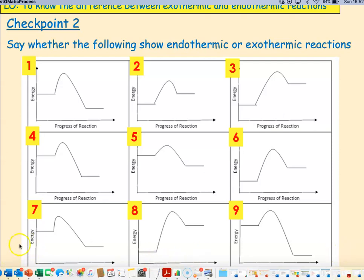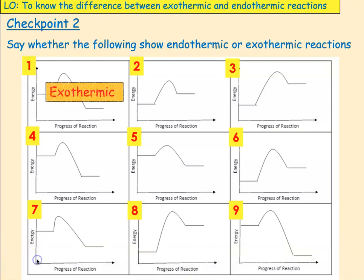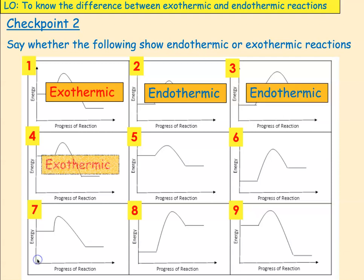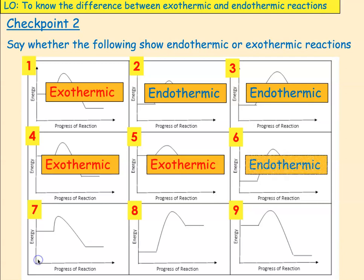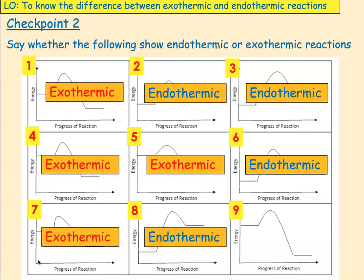Welcome back. Number one is exothermic, because the products are at a lower energy level. Two is endothermic. Three is endothermic. Four is exothermic. Five is also exothermic. Six is endothermic. Seven is exothermic. Eight is endothermic. And finally, nine is exothermic. Hopefully you can now recognise what the diagrams look like.